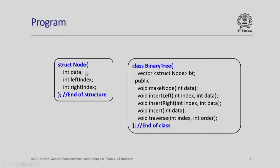There is the structure of the node. It has an integer data, an integer left index, and an integer right index. The class binary tree itself is defined to have, remember what we said, we will use a vector class. So it is a vector struct node bt. So bt now becomes our binary tree.